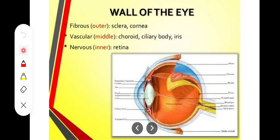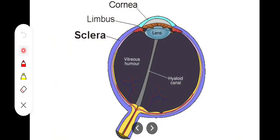In this video we're going to talk about the outermost layer of the eyeball — the fibrous layer consisting of the cornea and sclera. The anterior one-sixth of the eyeball is formed by the cornea, while the posterior five-sixths is formed by the sclera.